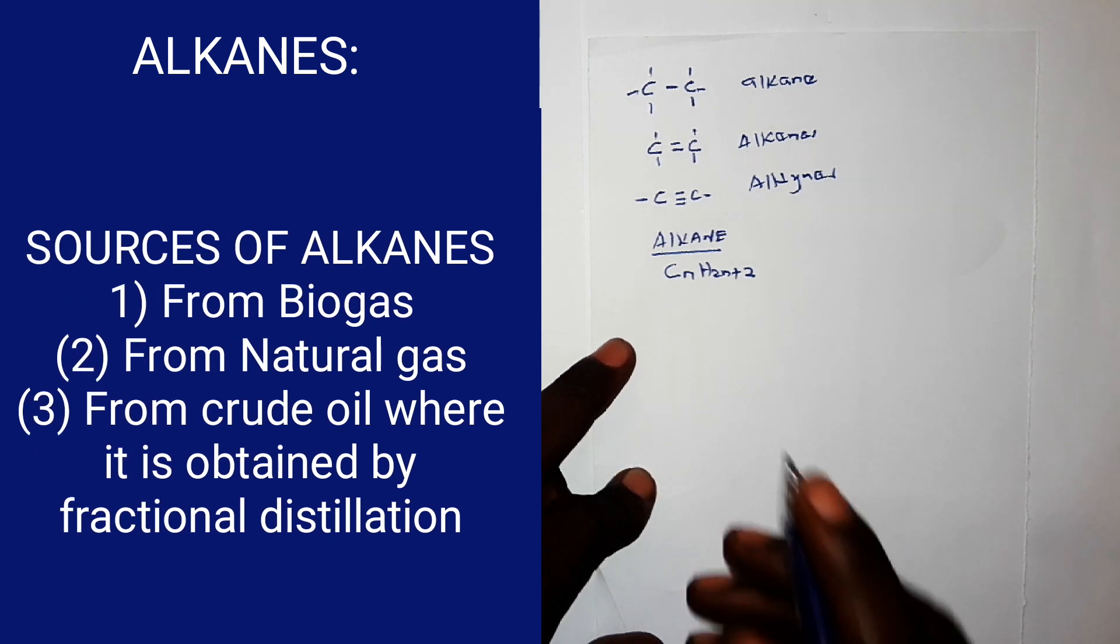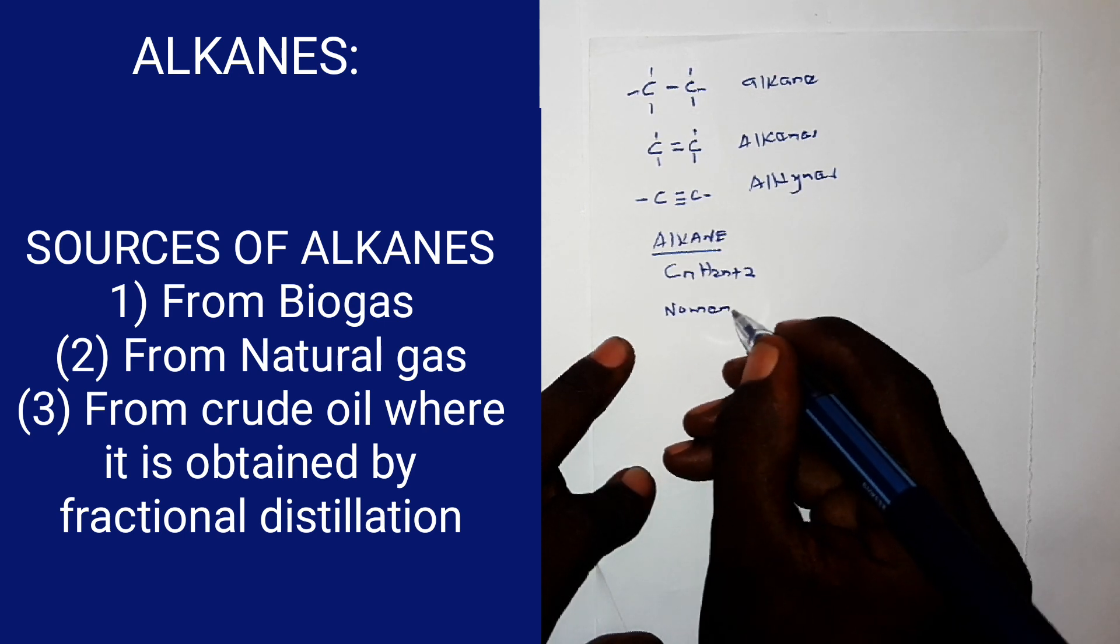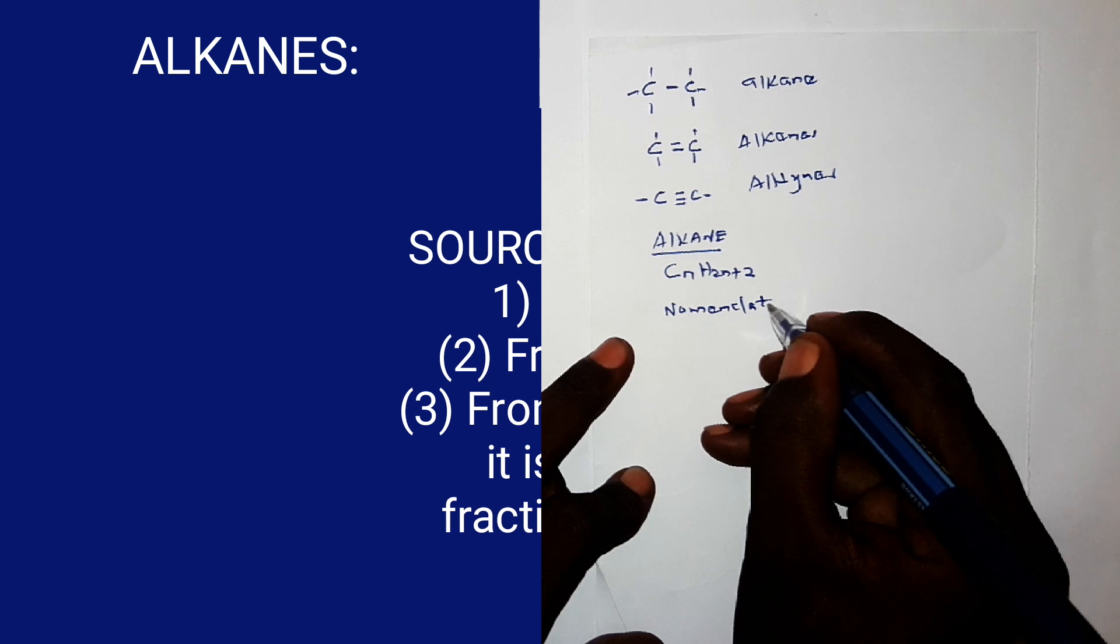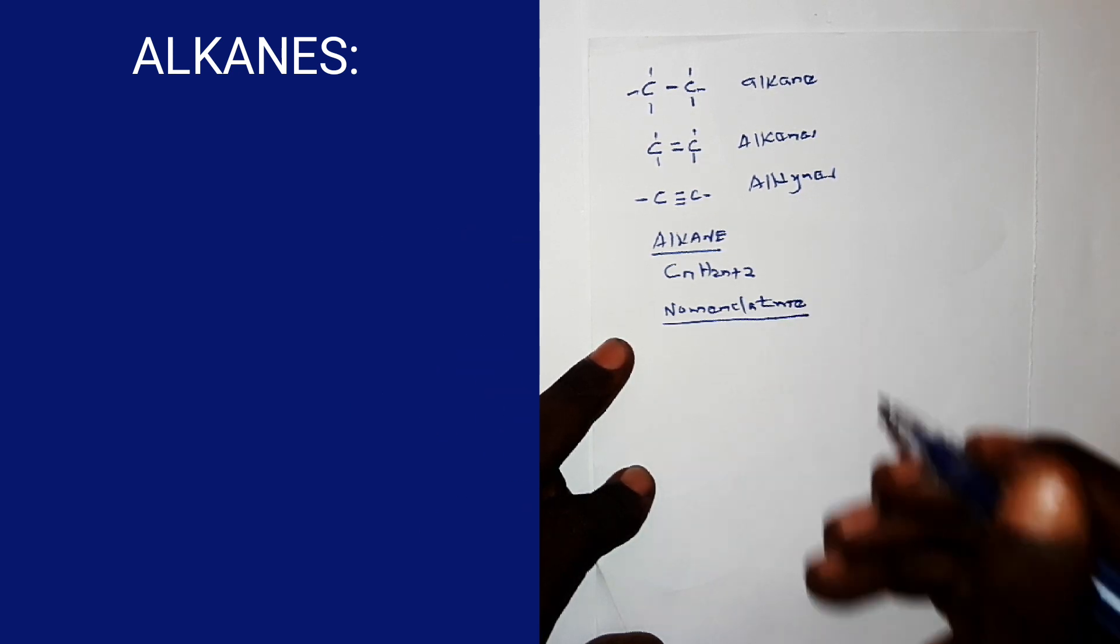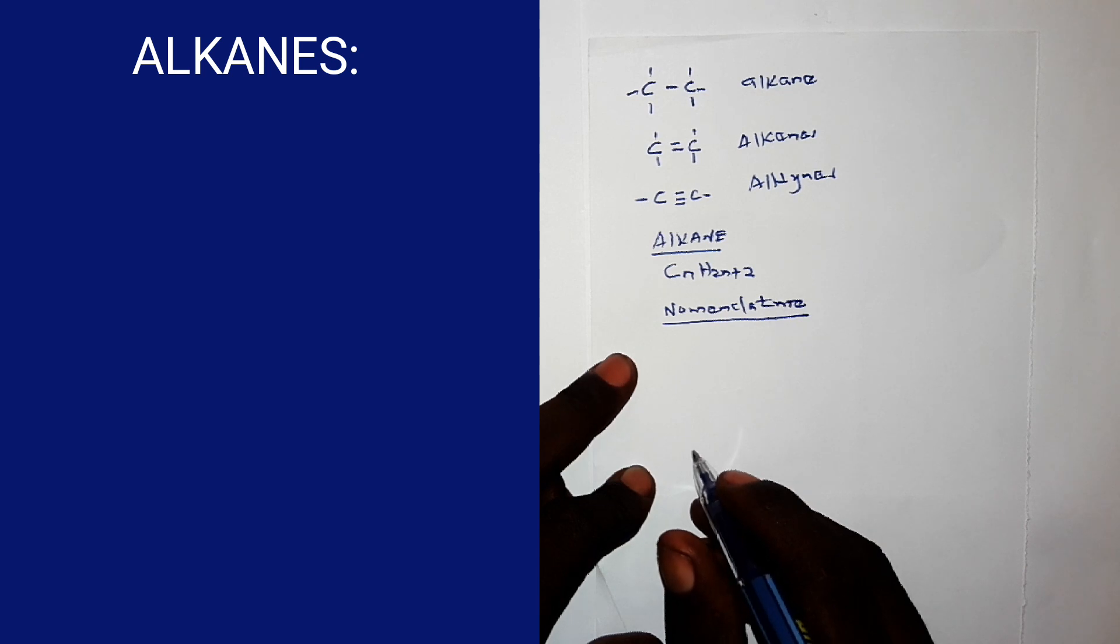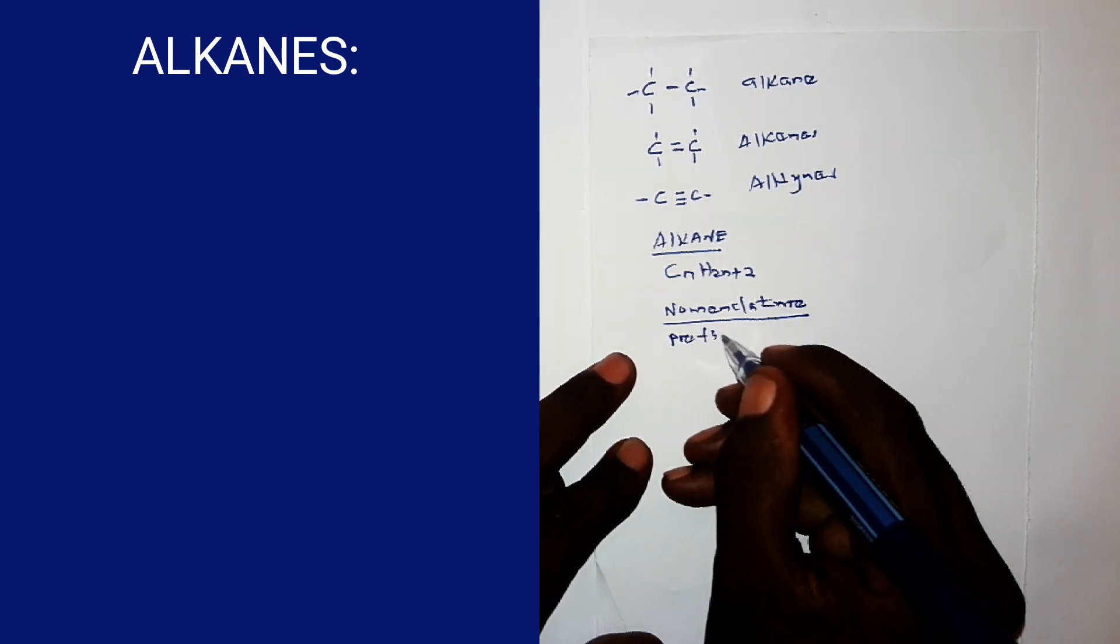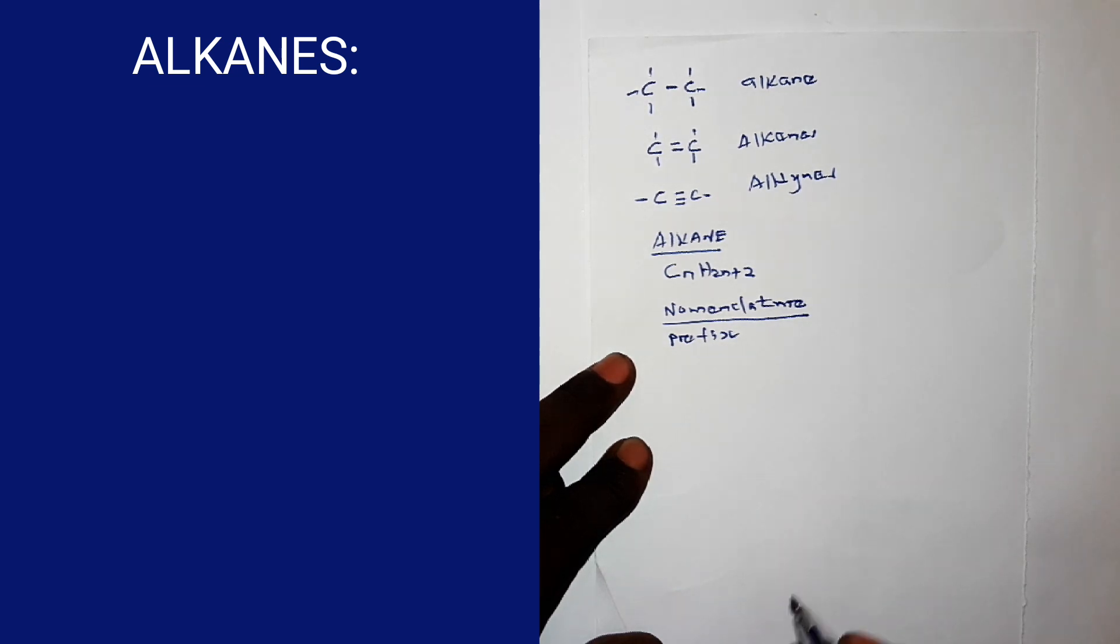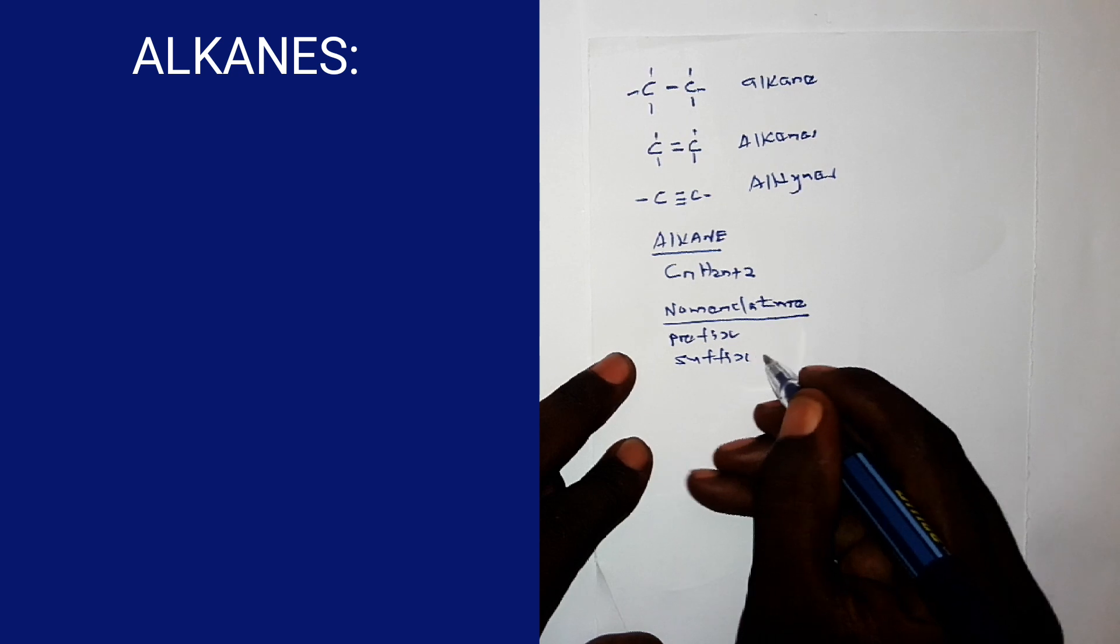Now, nomenclature of alkanes. Alkanes, how are they named? Nomenclature of alkanes. Now, alkanes are named by joining a prefix to a suffix -ane. The prefix indicates the number of carbon atoms. And then the suffix for all of them is -ane.